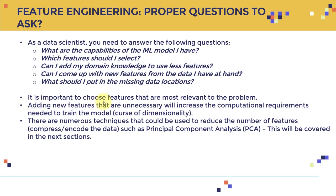It's important to choose features most relevant to the problem. Adding unnecessary features increases computational requirements — this is called the curse of dimensionality. You need to make sure you're not just feeding a bunch of data into the model without understanding what's happening or removing unnecessary columns. There are techniques to reduce the number of features, such as compression and encoding. One key technique is Principal Component Analysis, or PCA — for example, if you have 10 features, PCA can compress them into 5.